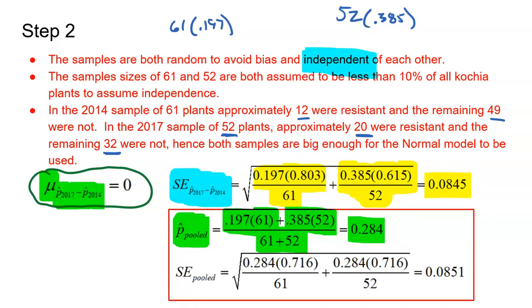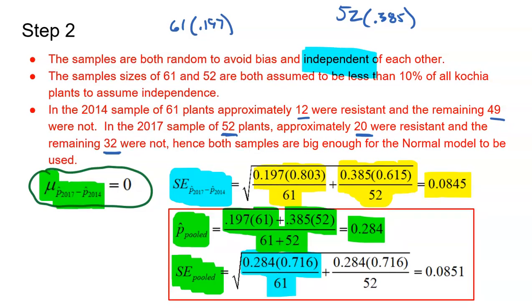The standard error pooled is using that same number twice. For 2014, I'm using the 0.284 and the opposite 0.716 with the 61. In 2017, I'm also using the 0.284 and the 0.716 divided by the 52. Because our null is that there's no difference. If there's no difference, put them all together, which means what I see in 2014 should be the same as what I see in 2017. When I do this, I get a standard error pooled of 0.0851.